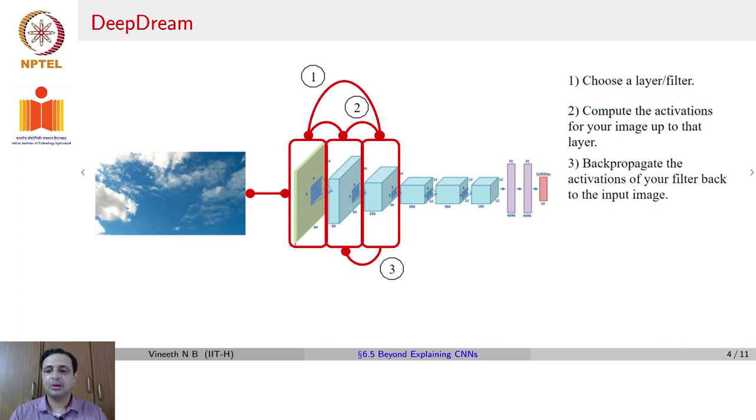Once you do that, you back propagate the activations of that filter back to the input image. You do a backprop to image, very similar to what we did in one of the earlier lectures. But this time, the input is not a black image or a gray image. This time, the input is just any other image that you want to juxtapose or overlay that input onto.